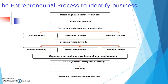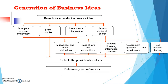Once we have identified the business, we have to generate a business idea. There is a standard procedure for generating a business idea: search for a product or service idea. There are many resources through which we can generate this idea — from your previous employment, hobbies, casual observation, or a deliberate search. Casual observation can be done by taking a walk in the market; a deliberate search can be done through magazines, newspapers and publications, TV shows, trade shows, product licensing information, and government agencies and departments. You can use creative thinking, evaluate possible alternatives, and determine your preferences.